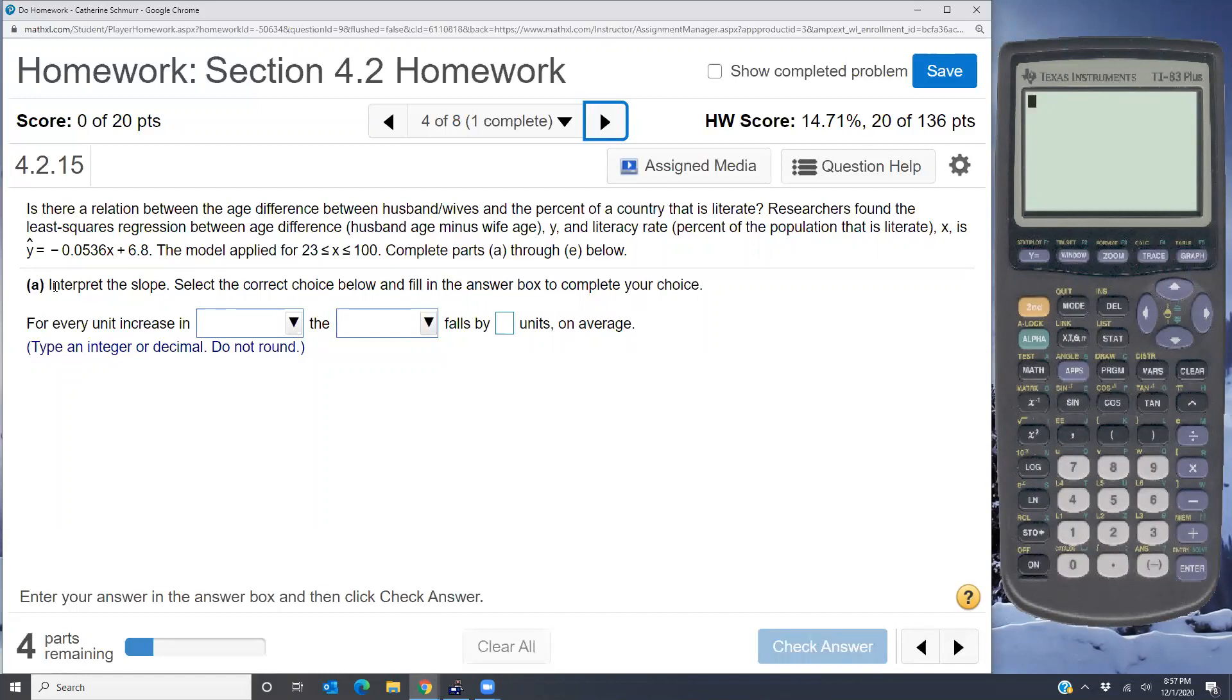So first of all, interpret the slope. For every unit increase in x, and x is the literacy rate, so the literacy rate, the y, which is the age difference, falls by 0.0536 units.